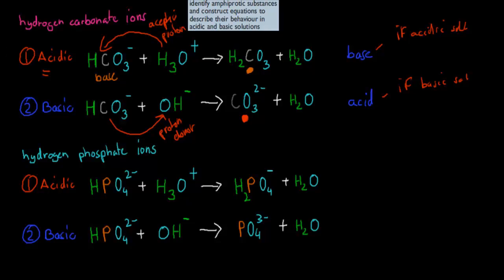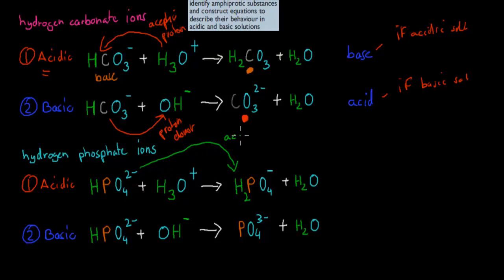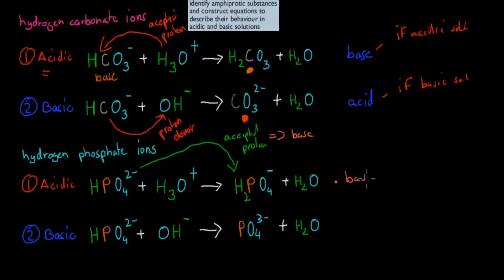The other example you should remember is hydrogen phosphate ions (HPO4²⁻). In an acidic solution surrounded by hydronium ions, it goes from HPO4 to H2PO4, which means it has accepted a proton — making it a base. It grabbed the hydrogen off the hydronium ion, and the hydronium ion becomes water. So the hydrogen phosphate ion acted as a base in the acidic solution.